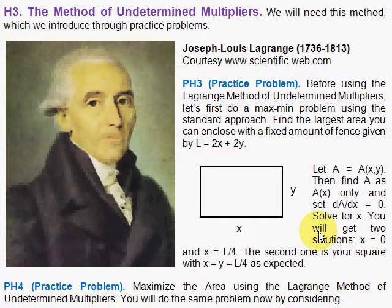And when you do that, you will get, actually you'll get two extrema. You'll actually get a value 0, X is 0, and the other solution will be the solution that gives you the square. In other words, that X and Y are equal and they're each one-fourth of the length of the fence you have.